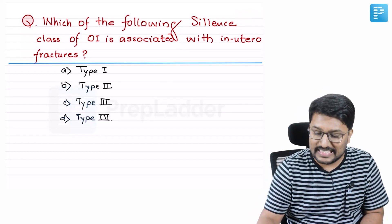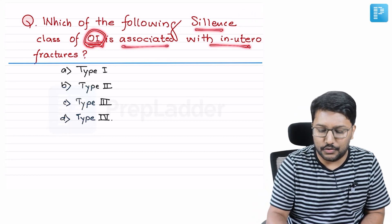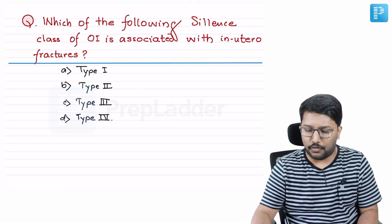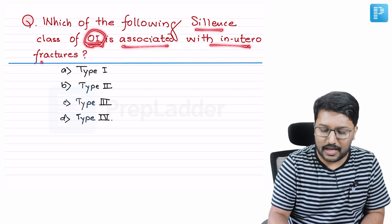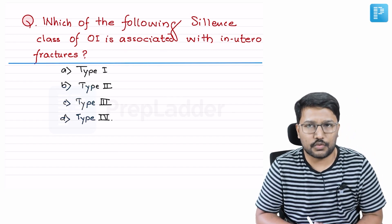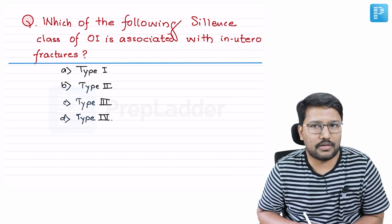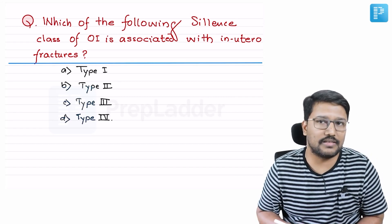Question number one: which of the following Sillence classes of osteogenesis imperfecta is associated with in utero fractures? The question itself gives us one important MCQ point — what is the name of the classification system used for osteogenesis imperfecta? That is the Sillence classification.